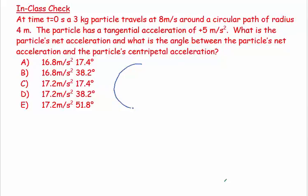The first thing we should do is draw this out. Here's the circular path, and here's the particle — it's a 3 kilogram particle traveling at 8 meters per second. It also has a tangential acceleration of plus 5 meters per second squared. Because it's going in a circle, I know there's also a centripetal acceleration. So I have two accelerations: one because it's going in a circle — that's the centripetal acceleration — and another pointed in the same direction as the tangential velocity.